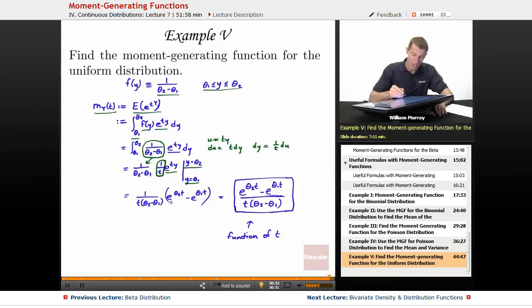So, I plugged those in, and I still had 1 over t times theta 2 minus theta 1, and it simplified down well. It's still quite complicated considering that it's the uniform distribution. You might expect something simpler for the uniform distribution, but you end up with this function of t that does represent the moment generating function for the uniform distribution.